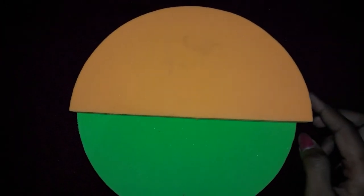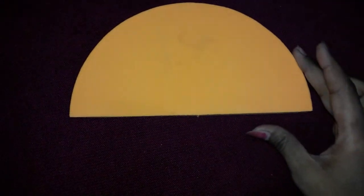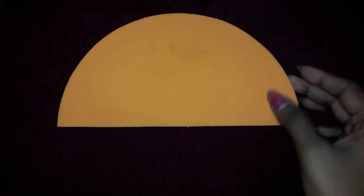So students, yeh kiske baare mein hamne information liya aaj? Dekho iske baad. Agar mai isko cut kar deti ho, like this, equal part kar deti hain. Toh isko bolenge hum semi circle. Kya kahenge hum? Semi circle. So yeh half a circle ka part. Toh isse hum bolte hai semi circle.